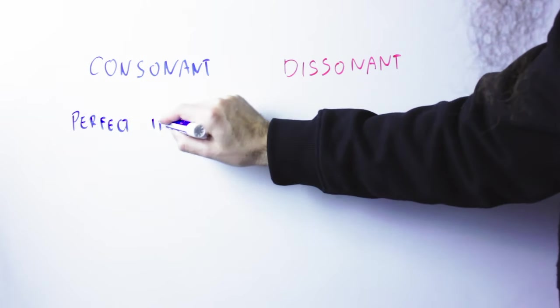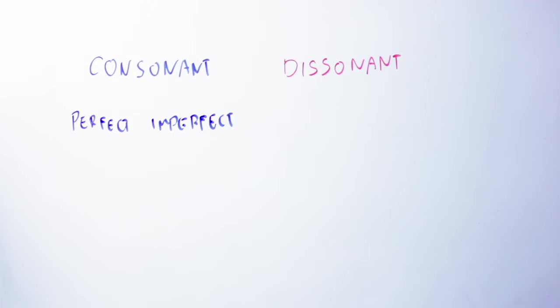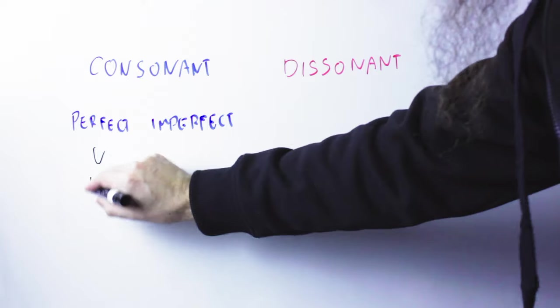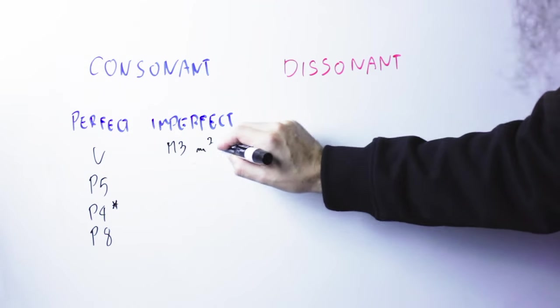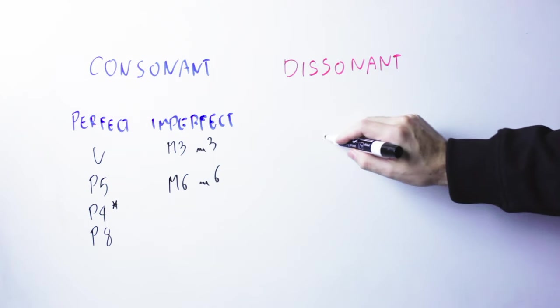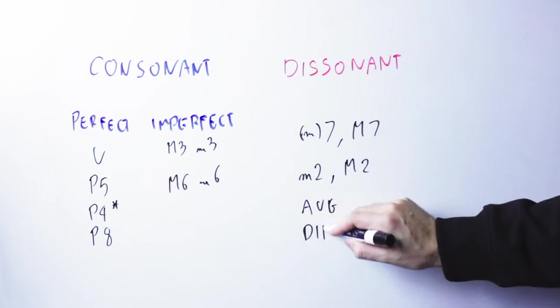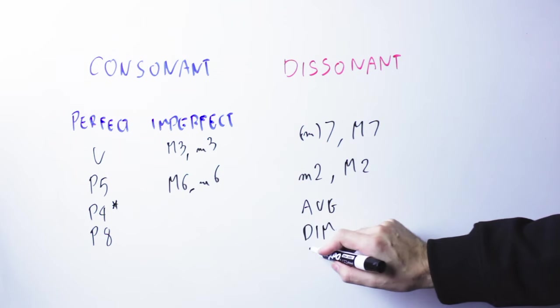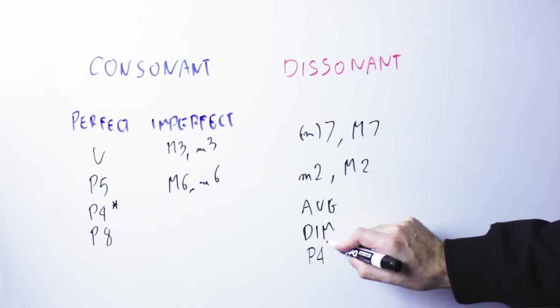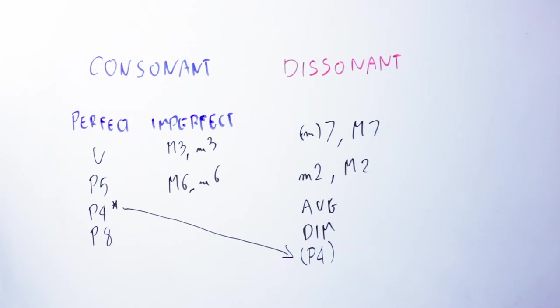Consonant intervals also divide in two subcategories. We don't care about those two, but just to be precise, one is perfectly consonant and one is imperfectly consonant. Perfectly consonant intervals are unison, perfect fifth, perfect fourth, and the octave. Imperfectly consonant are major and minor thirds, major and minor sixths. Dissonant intervals are seventh, major and minor, major and minor seconds, and all augmented or diminished intervals. And there are some situations where the perfect fourth can be considered dissonant, but right now we really don't care about that.